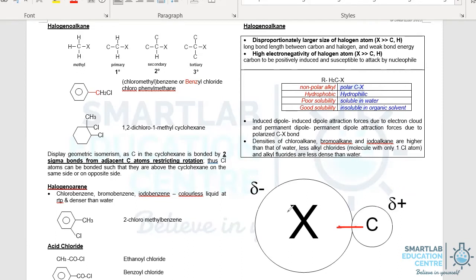Second part is to take note that X is way more electronegative than carbon. So therefore, because of this, there will be a delta minus charge on the halogen, while the carbon that's bonded to the halogen will be delta plus. How does that affect its physical properties?